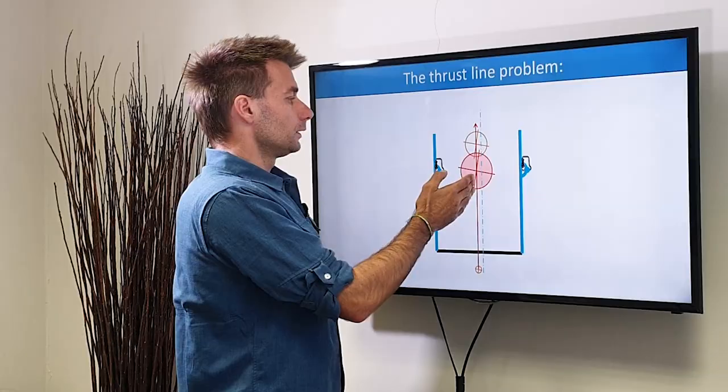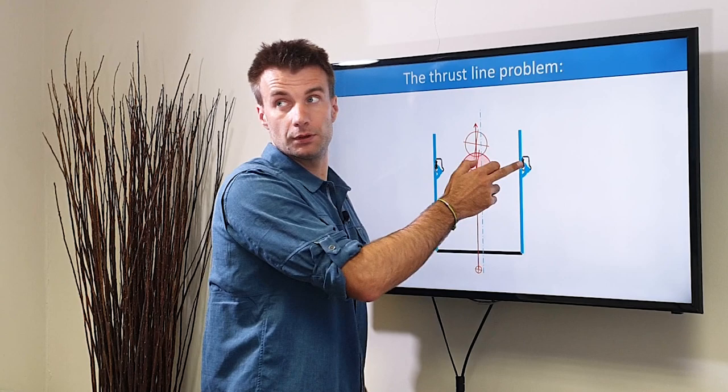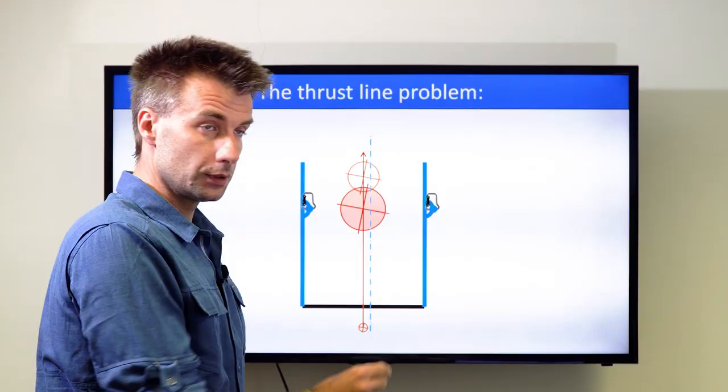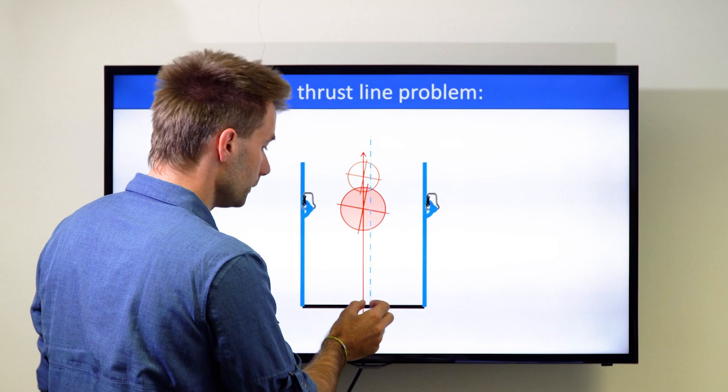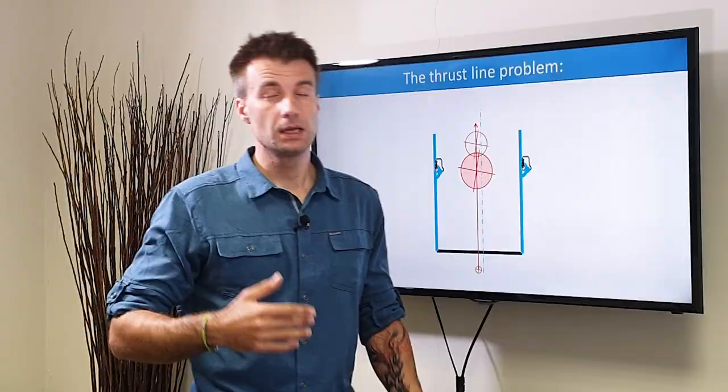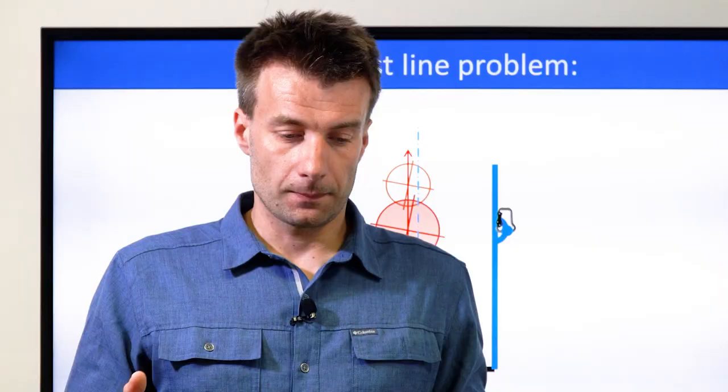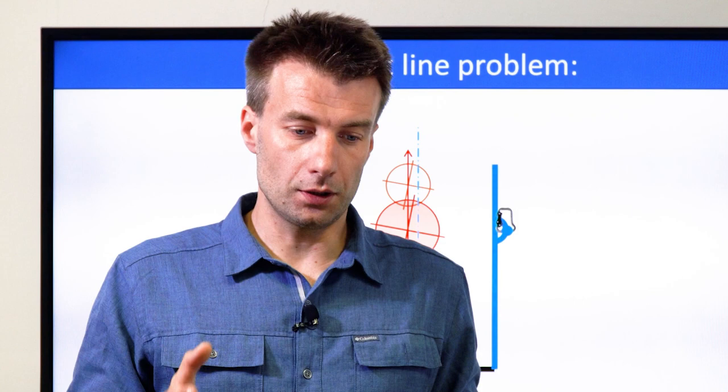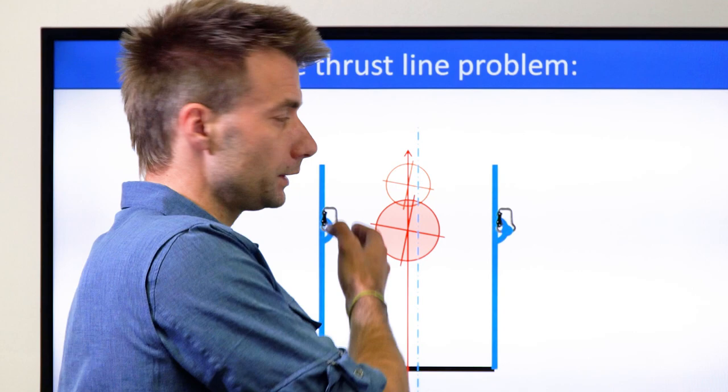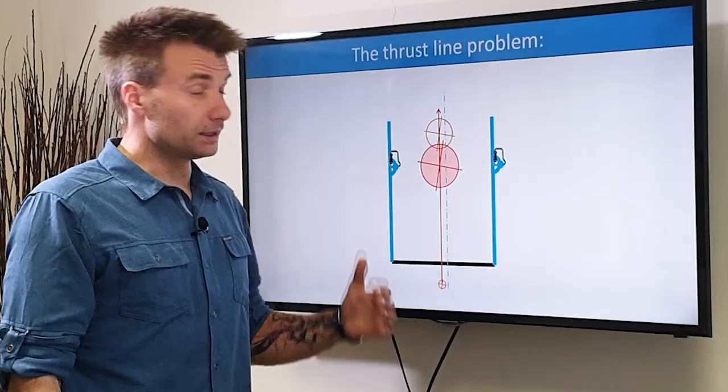Now you see that just as the center of gravity, the thrust line is off center relative to the carabiners. That means the thrust is applied more onto the left carabiner than onto the right one. If it's just moderate, it's not really a problem. But if it would be more off center, then it may eventually have some twisting tendencies.